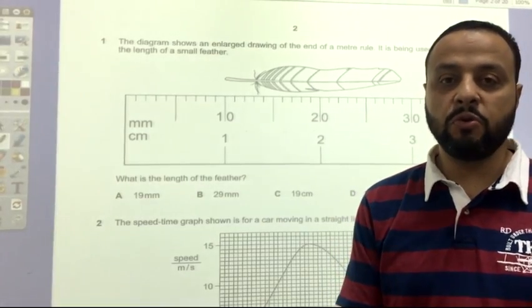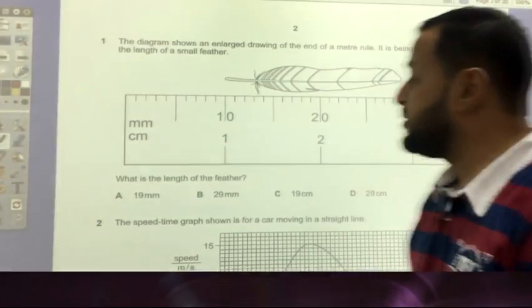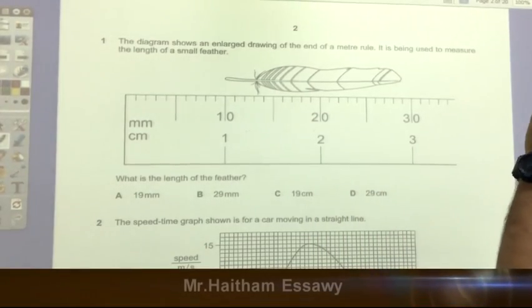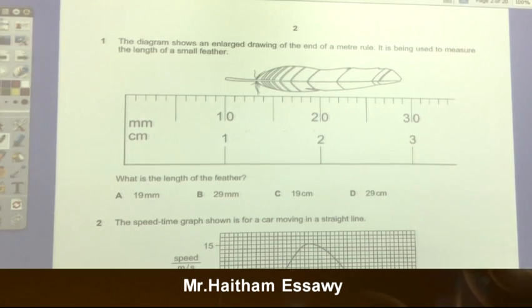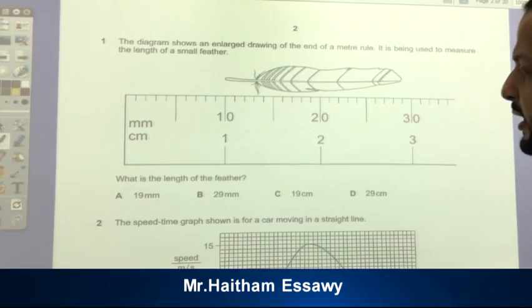Hello guys! Today I want to solve some questions from paper 2, 2016. The first question: the diagram shows an enlarged drawing of the end of a meter row. It is being used to measure the length of a small feather. What is the length of the feather?